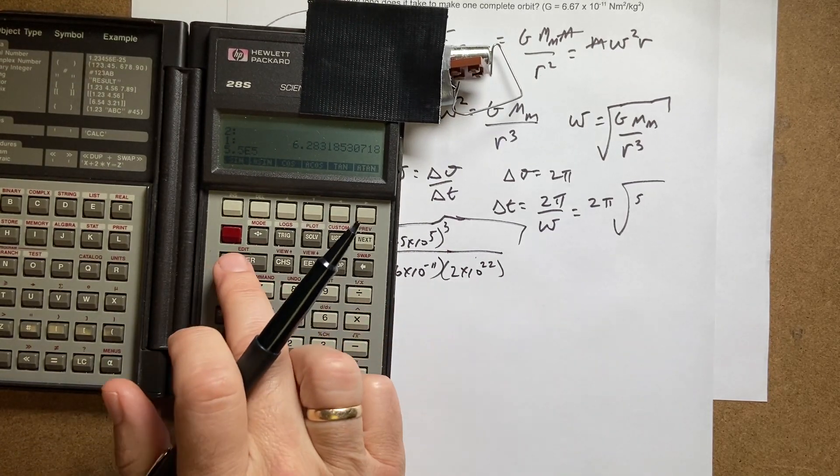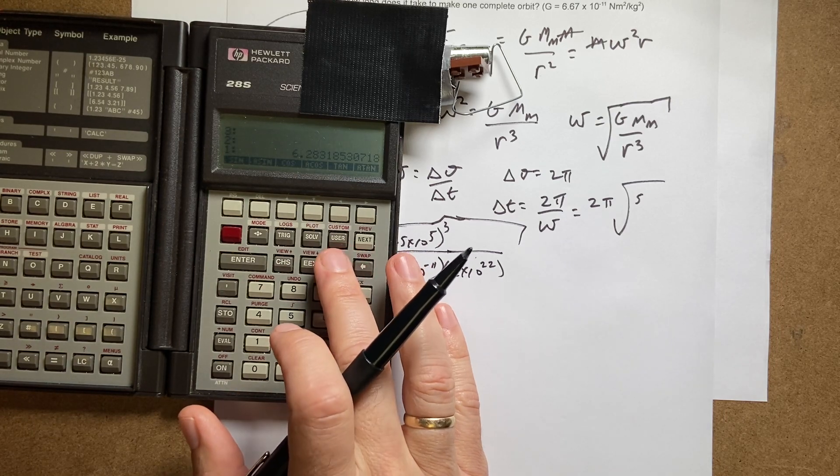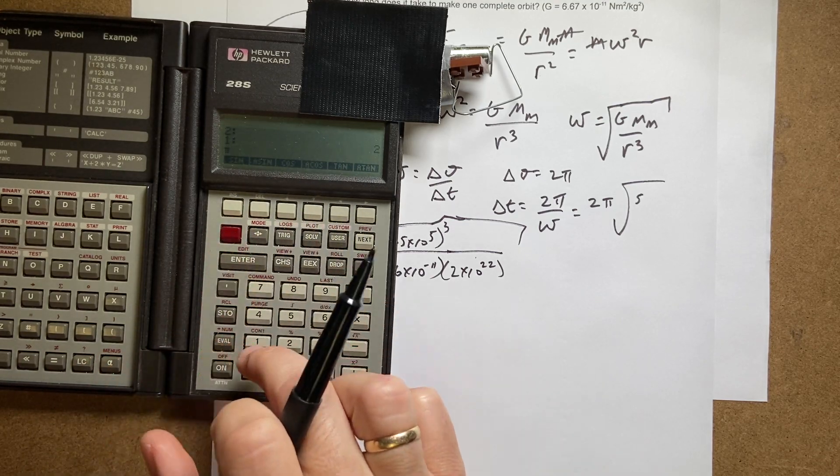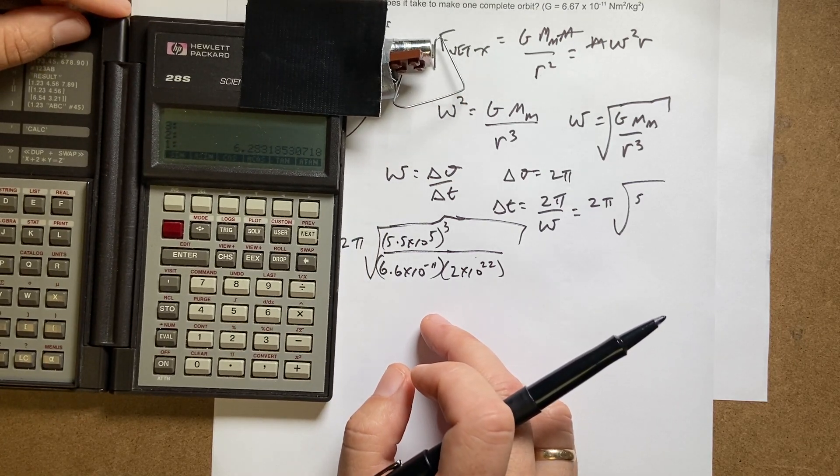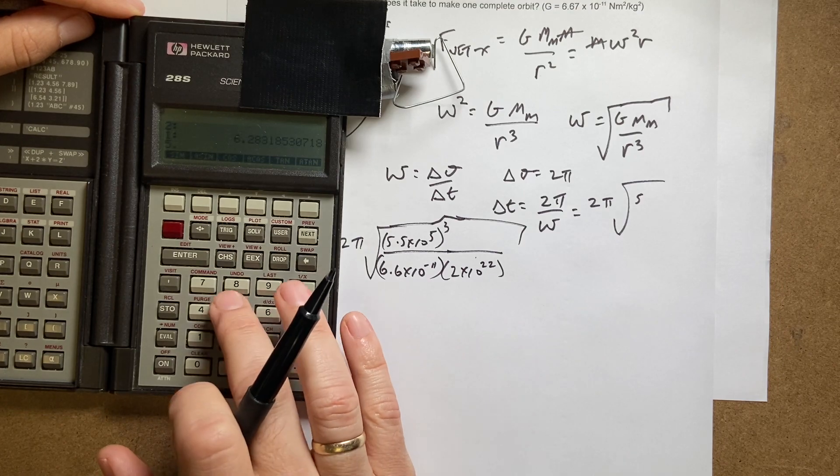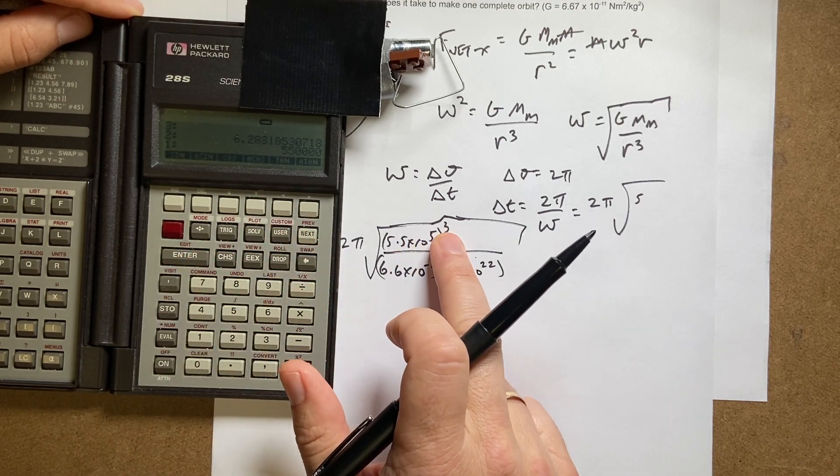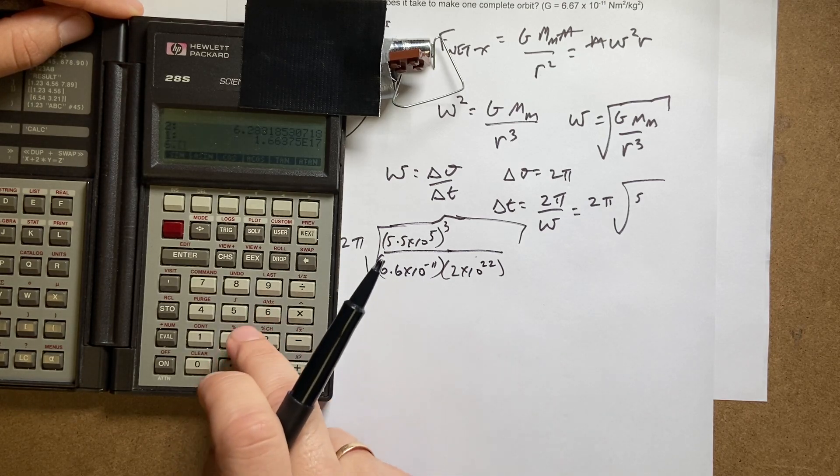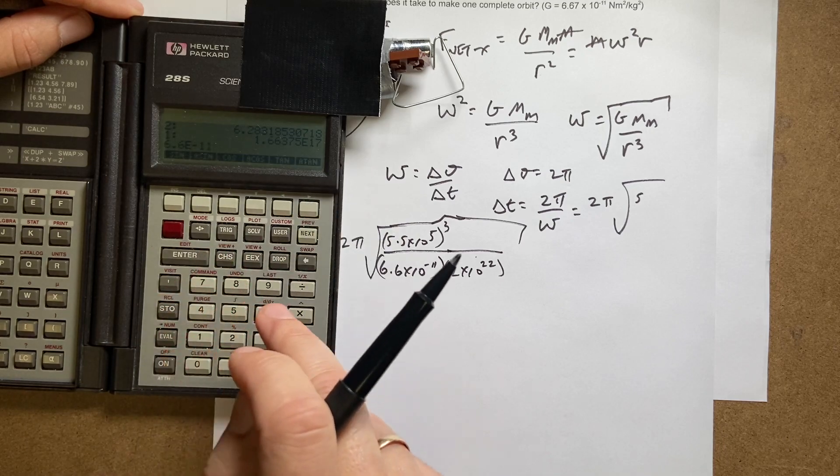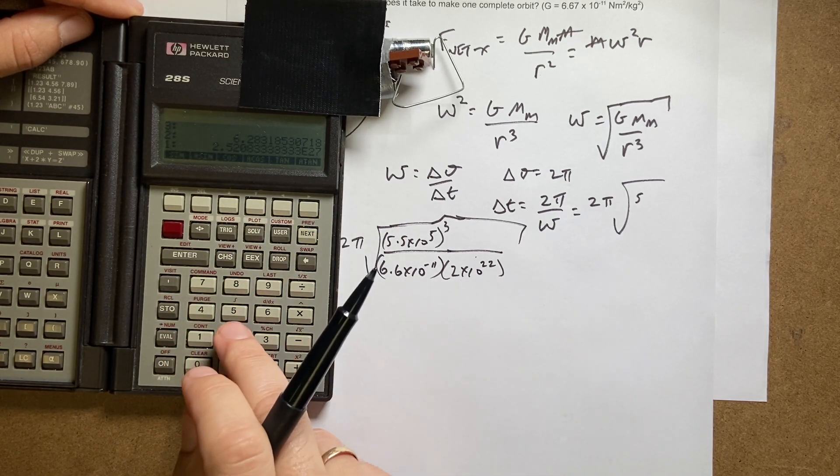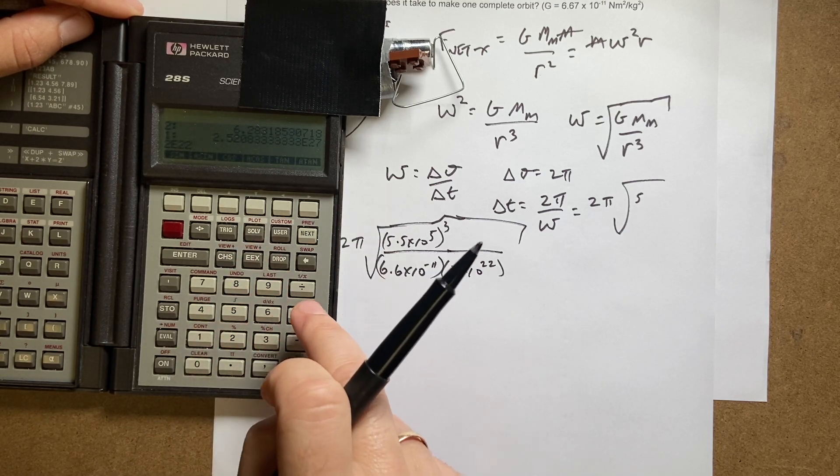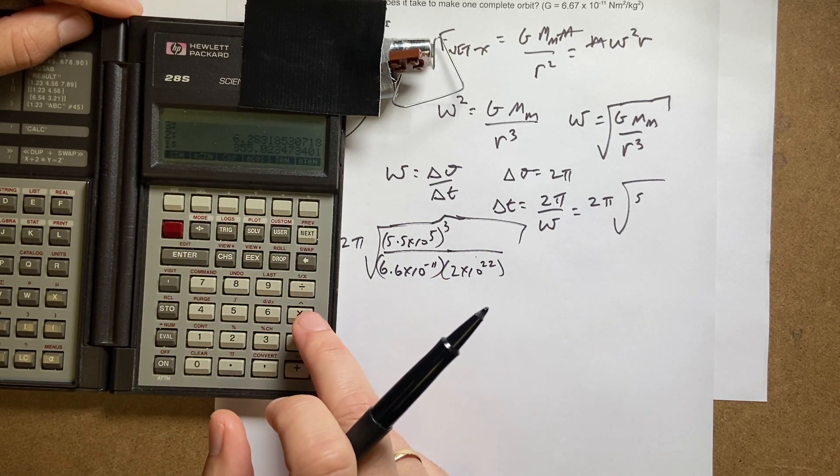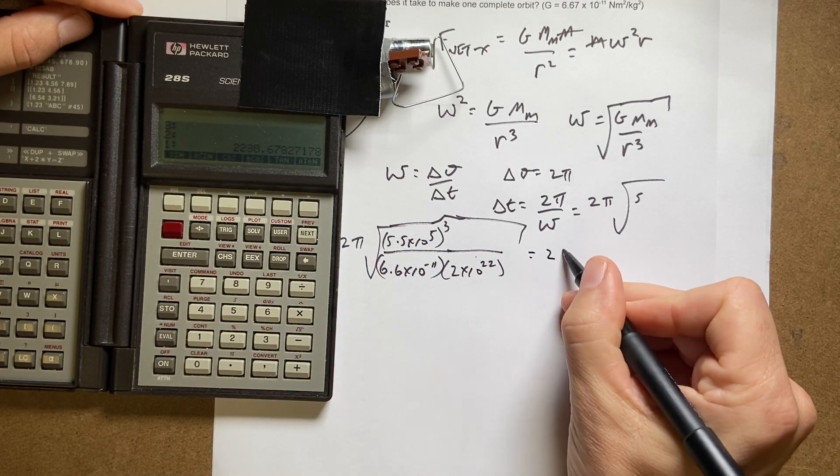Okay, enter. I'm not doing well here. Okay, 2, enter, pi times. And I was all bragging like I'm so cool. That's, okay, I was reading that wrong. Okay, 5.5 times 10 to the fifth, enter. Now I'm going to raise that to the third power, so I'm going to say 3 to the third. Got it. Okay, now I need to divide by this, 6.67 times 10 to the negative 11th, change sign, divided by. Now I need to divide by 2 times 10 to the 22. Now I need to take the square root of that. Now I need to multiply. And I get 2,030 seconds.